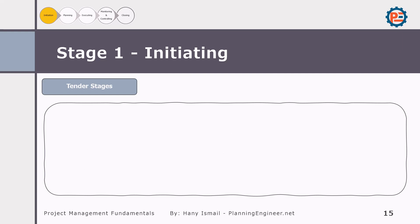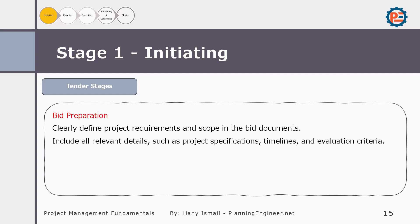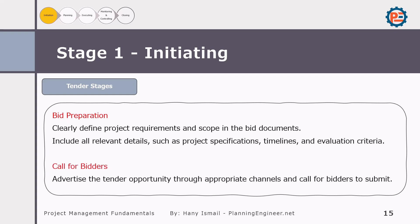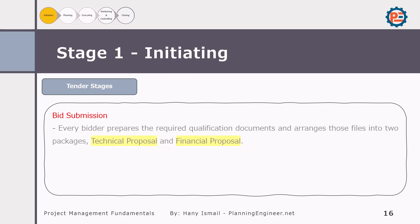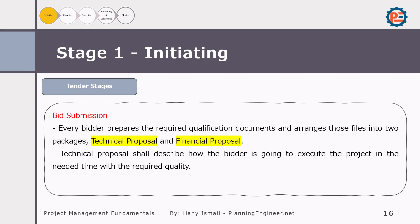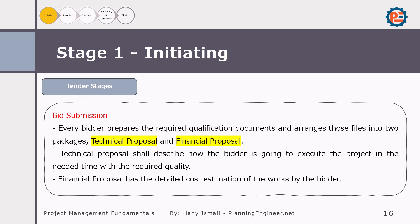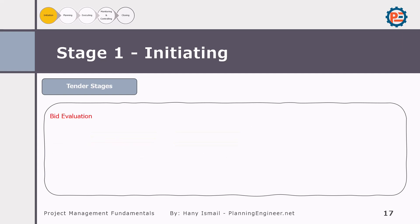During bid preparation, it is important to clearly define the project requirements and scope, including all relevant details such as specifications, timelines, and evaluation criteria. Once bid documents are prepared, the next step is to call for bidders — advertising the tender opportunity through appropriate channels. Each bidder prepares their required qualification documents arranged into two packages: a technical proposal and a financial proposal.